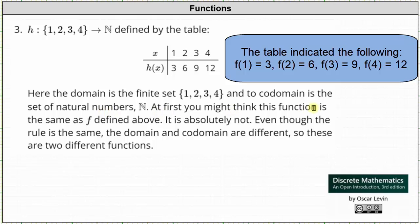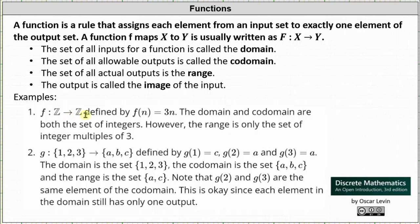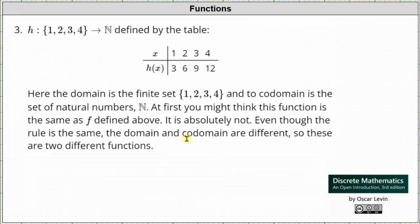At first we might think this function is the same as the first function f defined in number one, but this is not true. Even though the function rule is the same — notice how the outputs are determined by multiplying the inputs by three — the domain and codomain are different, so these are different functions. Looking back at number one, the domain and codomain were the set of integers, and the range was the infinite set of integer multiples of three, so the domain, codomain, and range are all different.